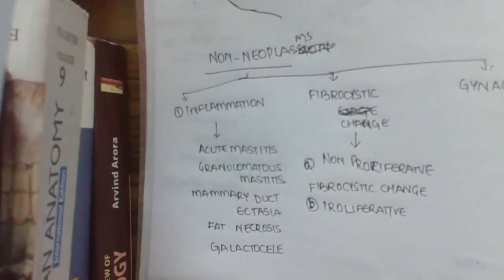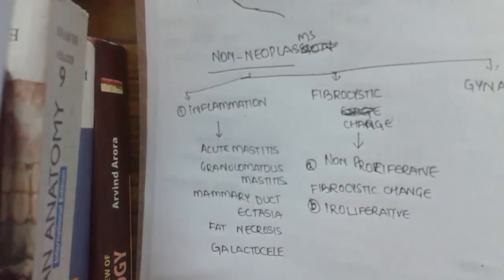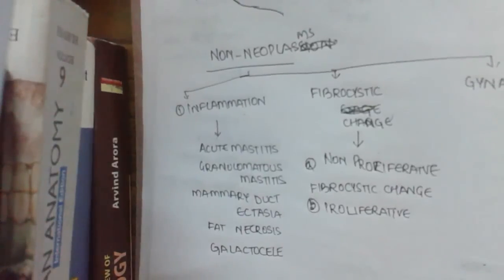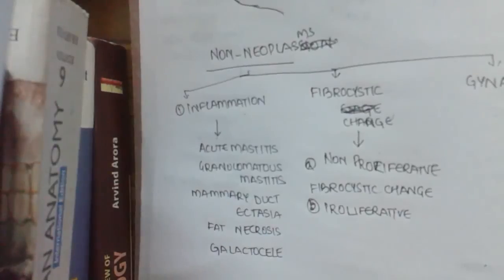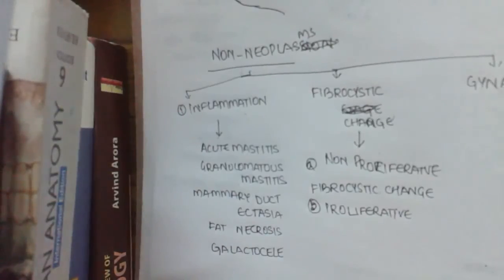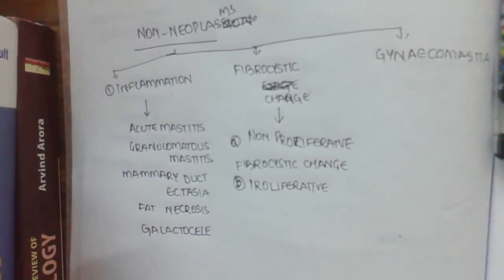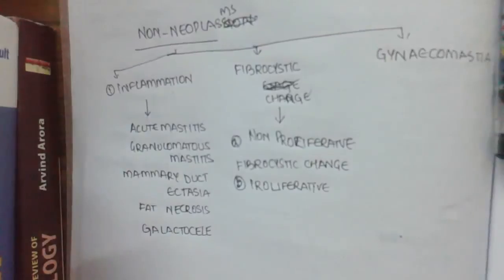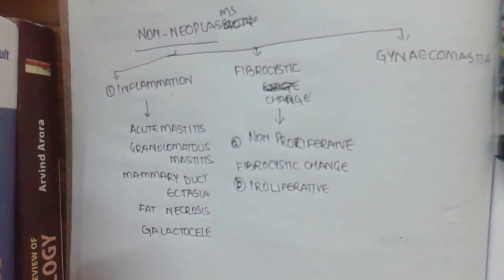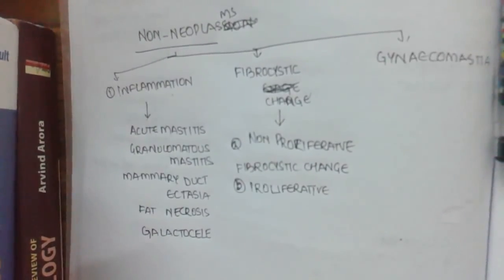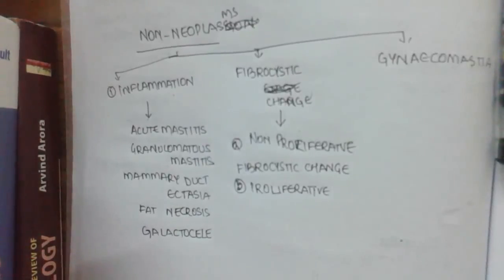And the third one is gynecomastia which is hypertrophy of the male breast. So we'll deal with each of these in separate classes. In our next class I would deal with inflammations. Don't forget to remember this table before you know about non-neoplastic lesions, because this chart is what gives you an idea, an overview of the chapter of breast. Okay then, bye.